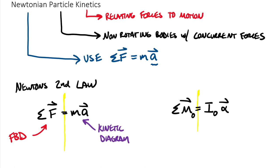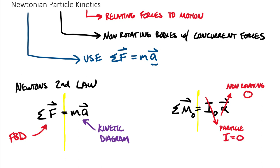The reason we can skip the moments equation for particles is one of two things: either the body is not rotating, so the angular acceleration alpha goes to zero; or we're actually dealing with a particle, which has a moment of inertia equal to zero. Either the body's not rotating or the particle's mass moment of inertia is zero, so we stick to just the sum of forces equation for particles. We'll need both equations when we get into rigid bodies.